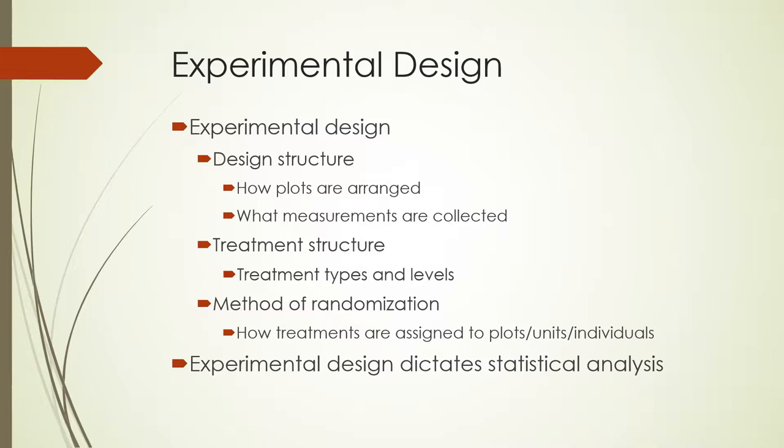Treatment structure refers to the actual treatment types and levels that are applied — for example, what levels of heavy metal you use in your aquaria when studying effects on invertebrate survival. Method of randomization is how the treatments are assigned to the plots, units, individuals, or subunits, and that really dictates the type of experiment you're developing.